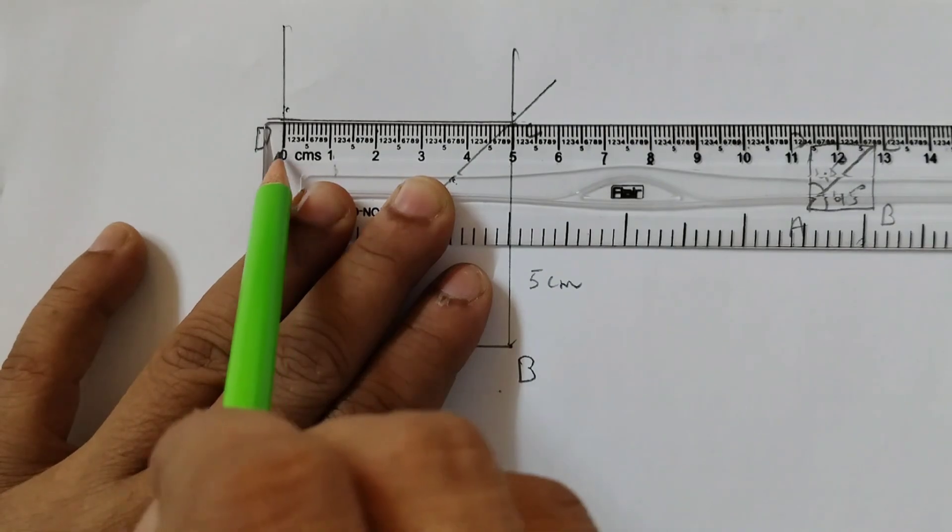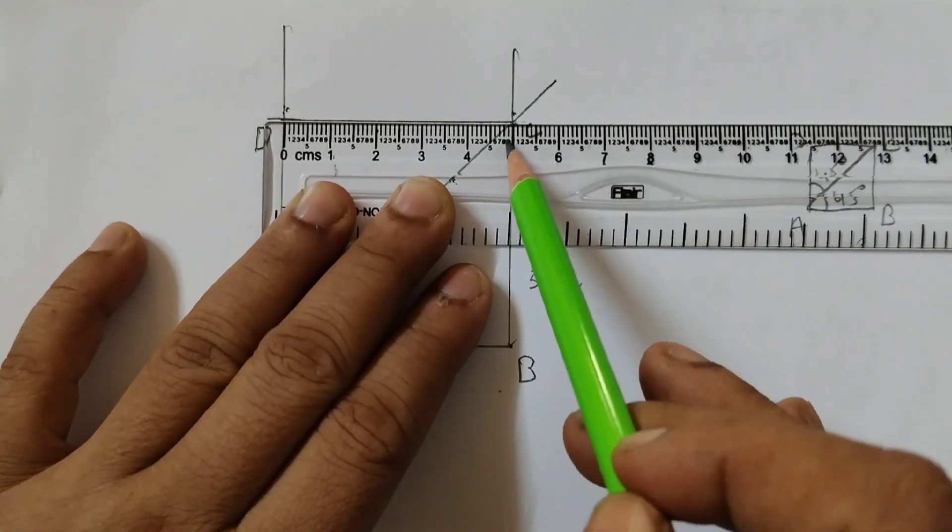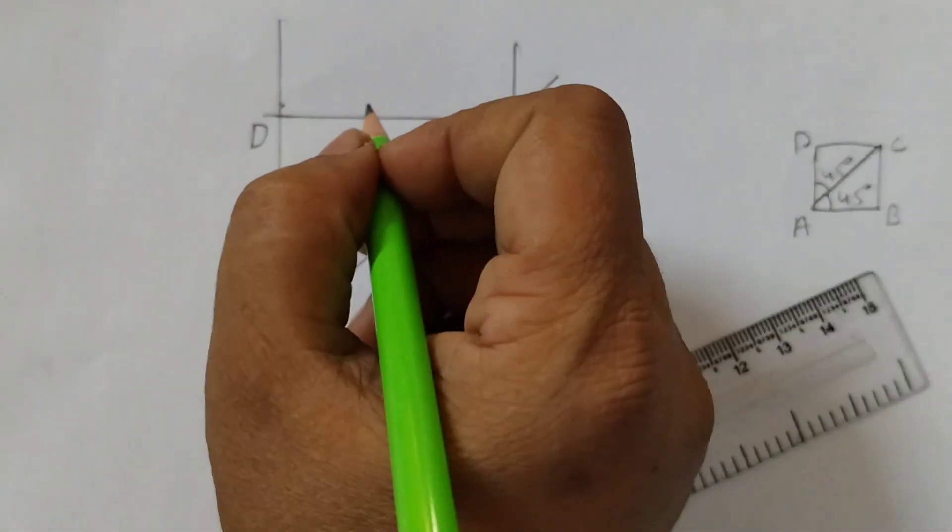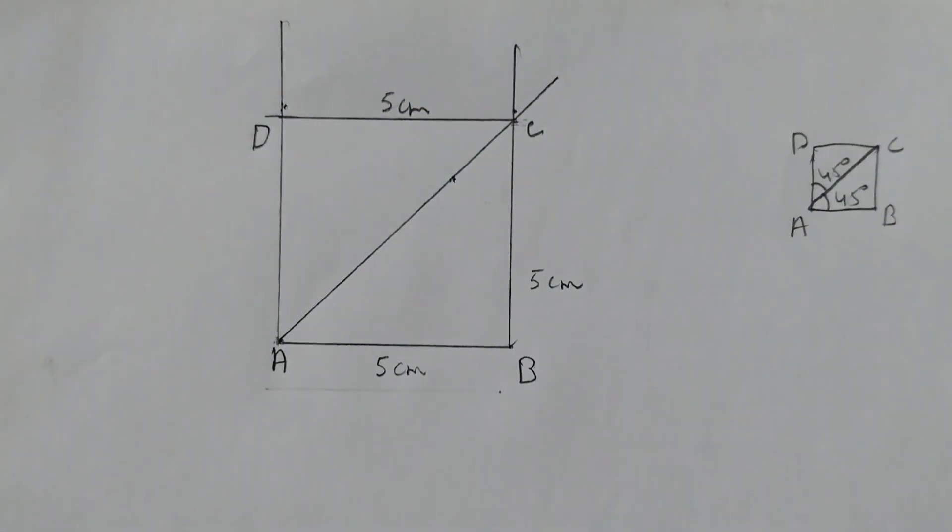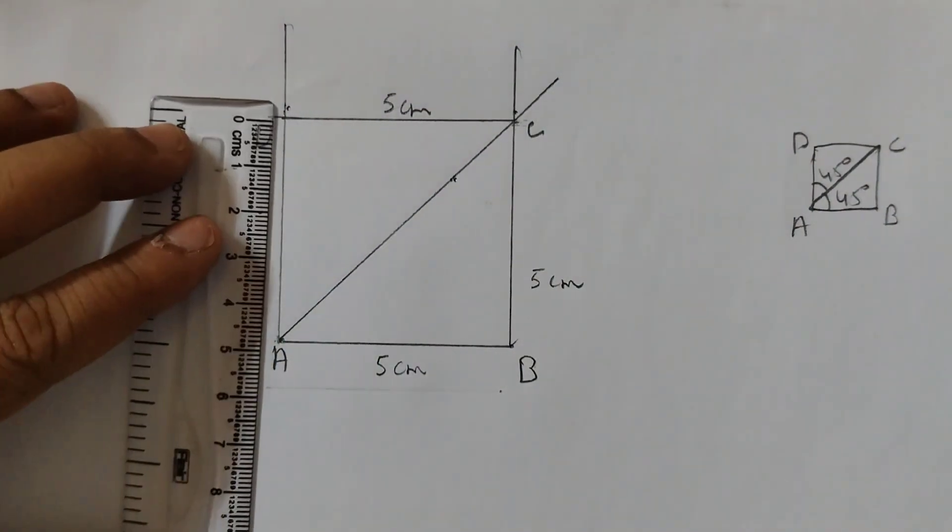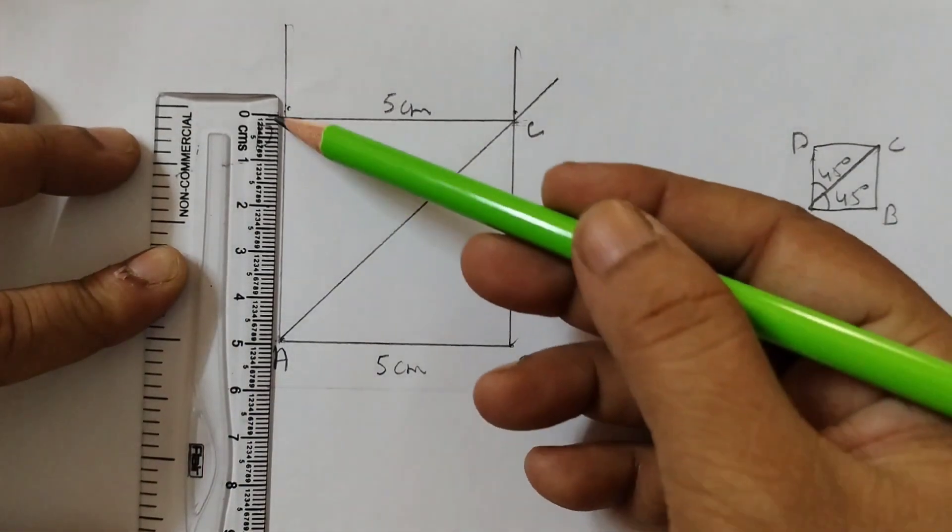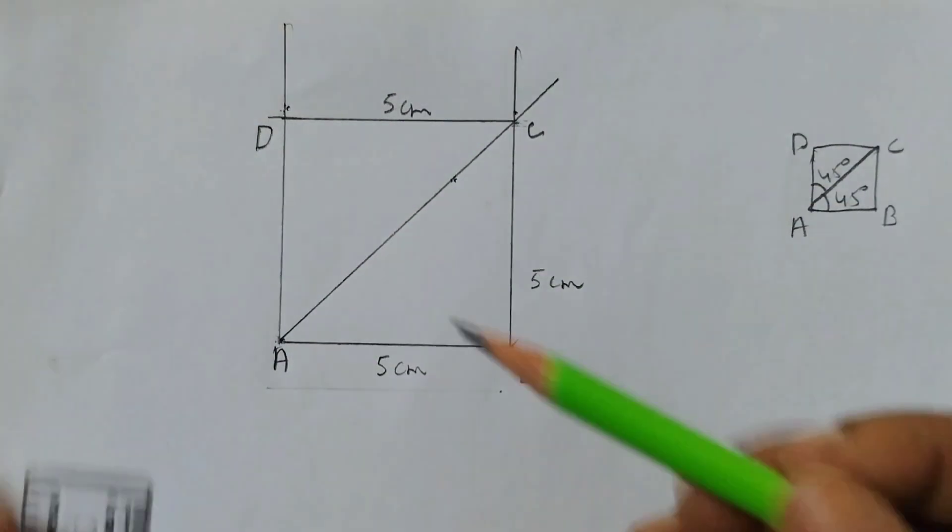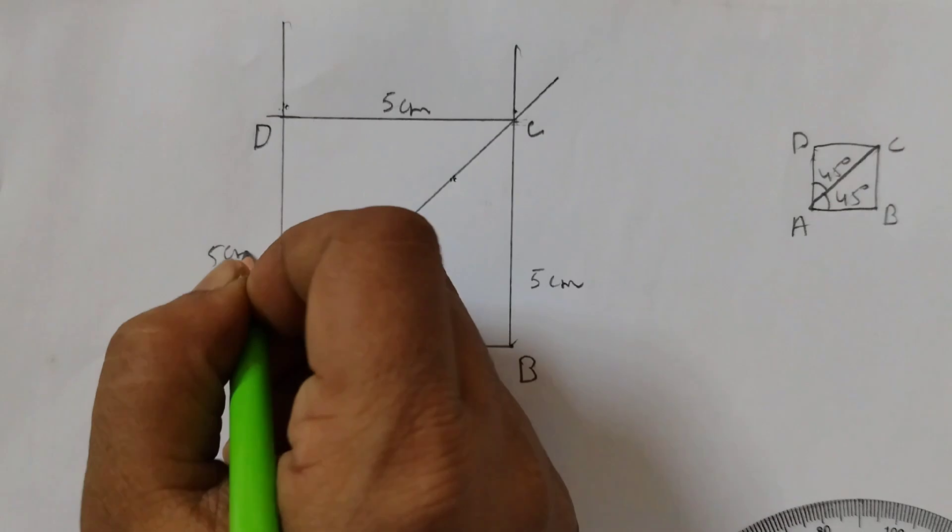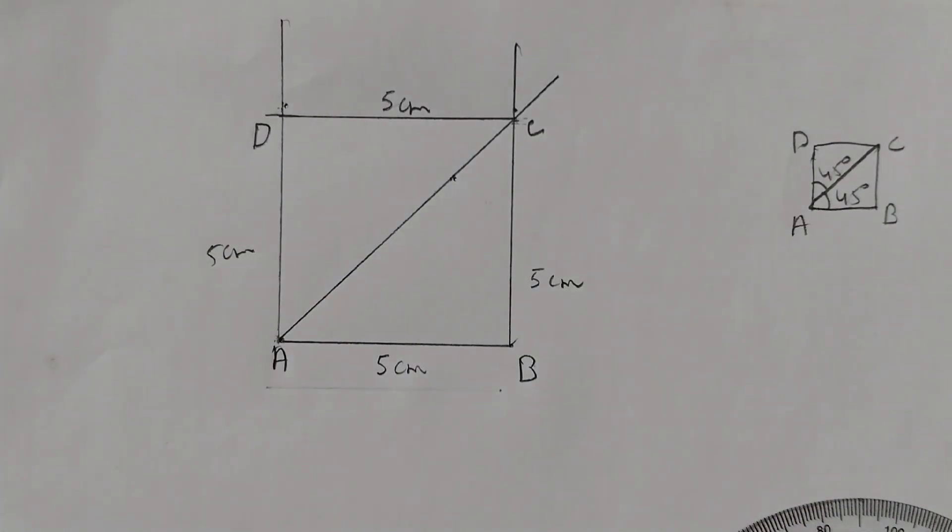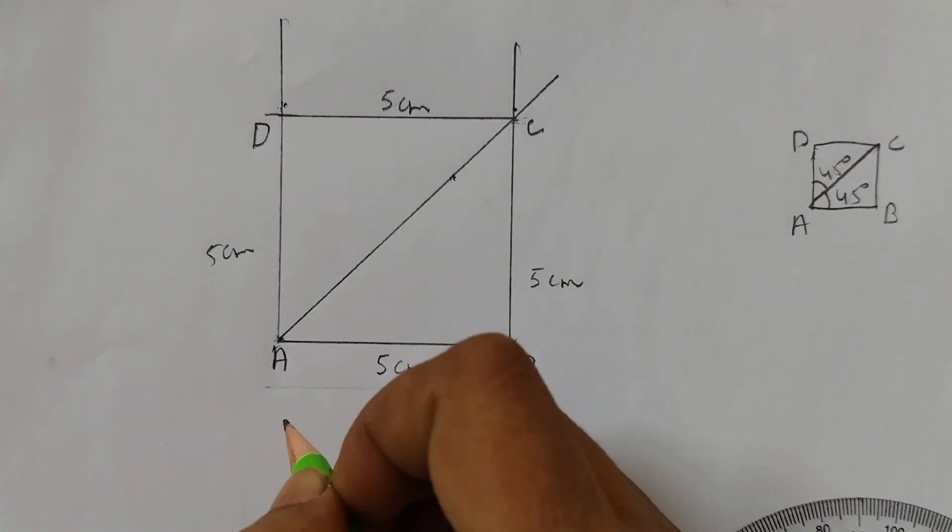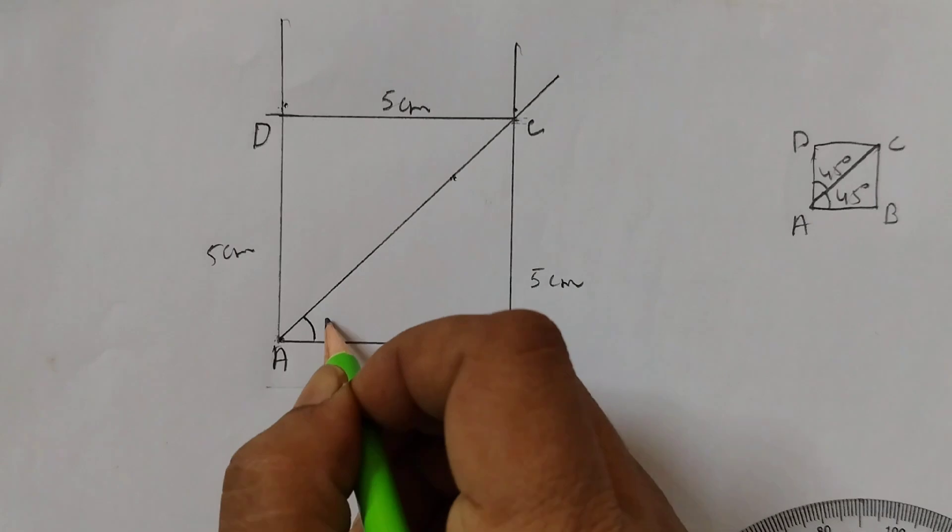Now see what do we observe. You can see here this is zero and this is five. This is five centimeters and this length will also be five centimeters. See here zero, five, five centimeters.